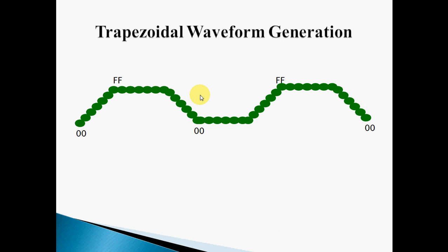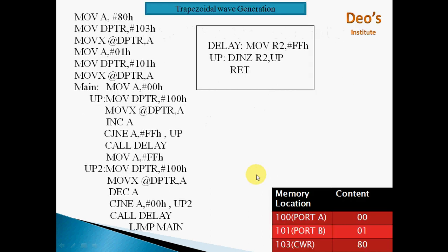Next is trapezoidal waveform generation. In this trapezoidal waveform, we increment from 00H to FFH, then call delay so FFH is sent for some amount of time, then decrement from FFH to 00H, and then 00H is sent for some time again. Then again from 00H to FFH, hold FFH, decrement to 00H — and so on. This is the code for trapezoidal waveform generation.